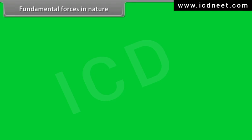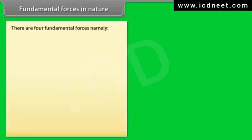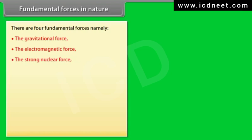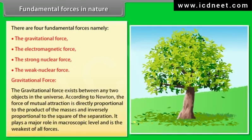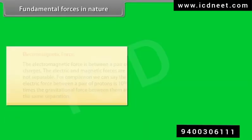Fundamental forces in nature: there are four fundamental forces — the gravitational force, the electromagnetic force, the strong nuclear force, and the weak nuclear force. The gravitational force exists between any two objects in the universe. According to Newton, the force of mutual attraction is directly proportional to the product of the masses and inversely proportional to the square of the separation. It plays a major role at the macroscopic level and is the weakest of all forces.